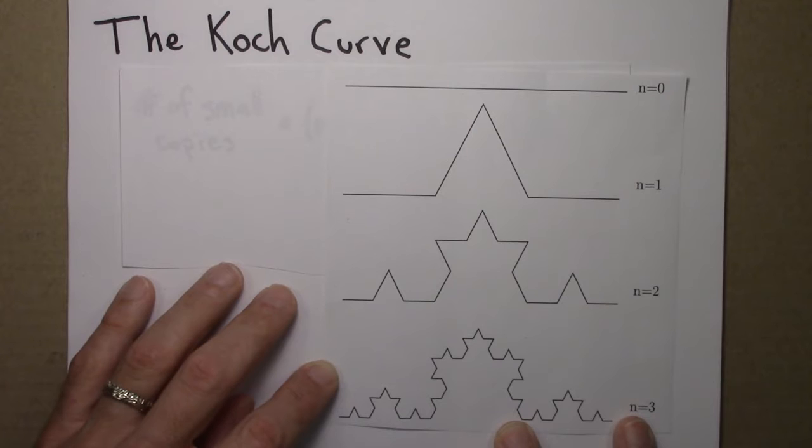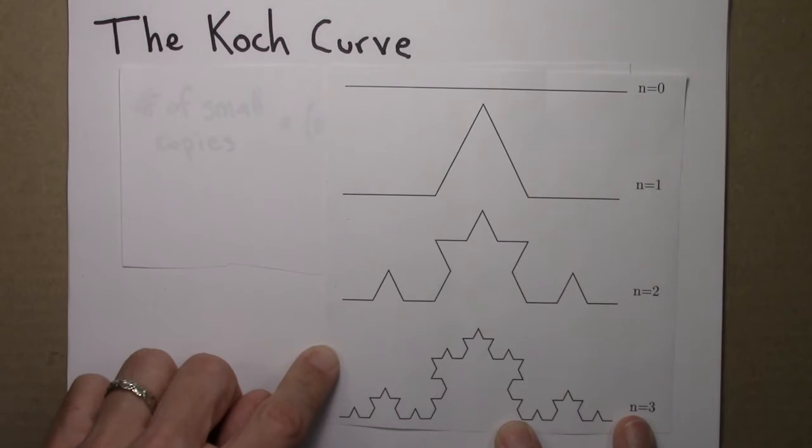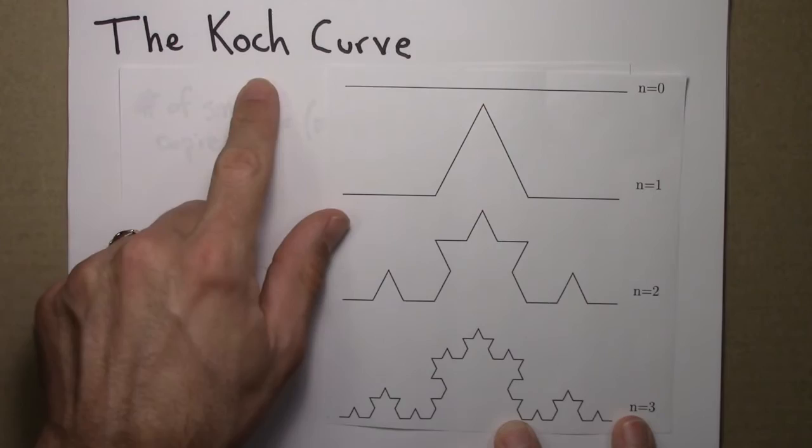This fractal is known as the Koch curve, after the Swedish mathematician Hilge van Koch, who was the first to come up with this construction shortly after 1900. I might slip up and pronounce it the American way, the Koch curve, but I'll try not to.